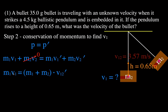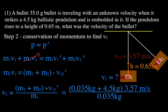We divide both sides by M1, the mass of the bullet. The velocity of the bullet before the collision equals the sum of the two masses times their velocity after the collision, divided by the mass of the bullet. Plugging in values: (0.035 kg + 4.5 kg) times 3.57 m/s, divided by 0.035 kg. The velocity of the bullet right before the collision is 463 meters per second.